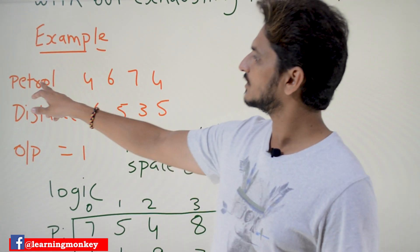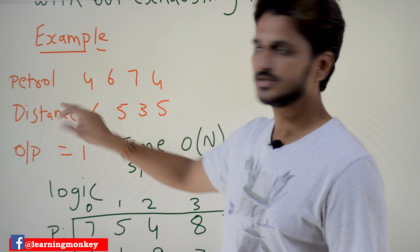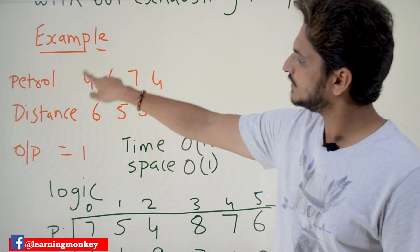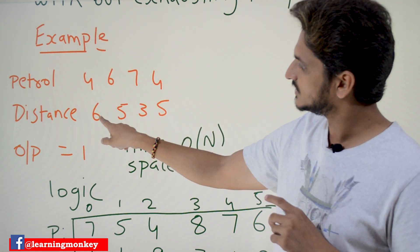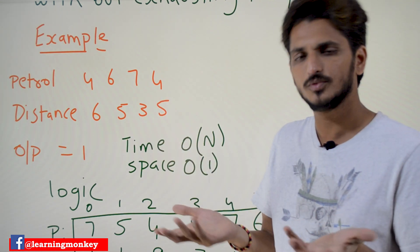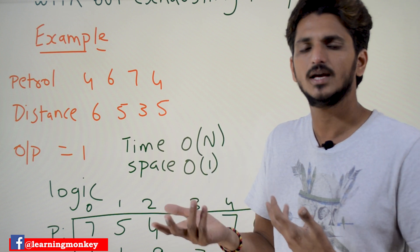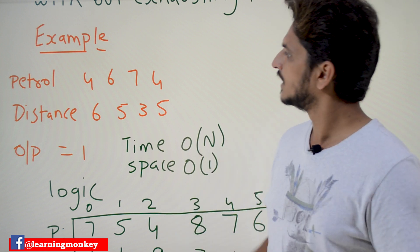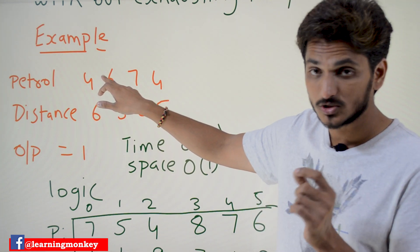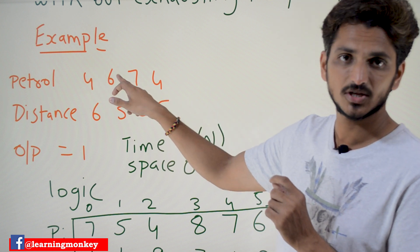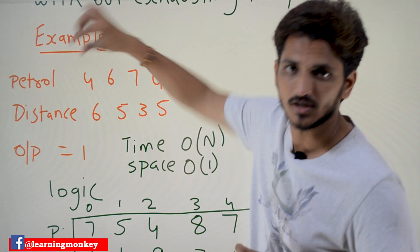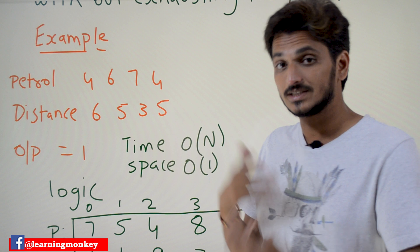With an example you are going to understand it better. The petrol bunks and distances are provided. The first petrol station has 4 litres of petrol available. The distance from here to the second petrol station is 6 kilometres. Is it possible to move from this gas station to the next gas station using this petrol? No. So we are not supposed to start our truck here.